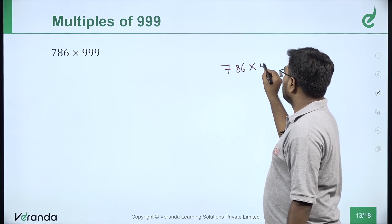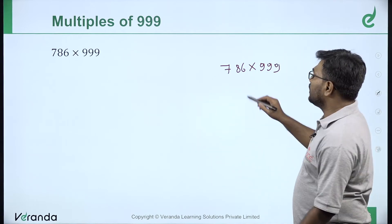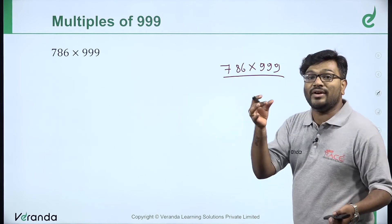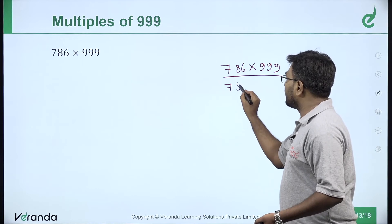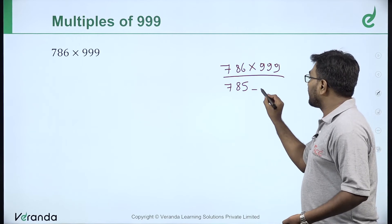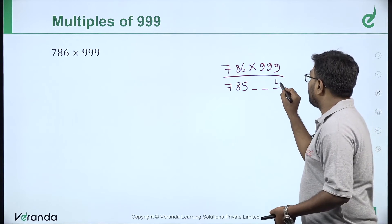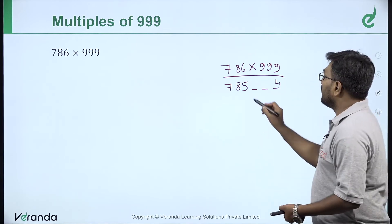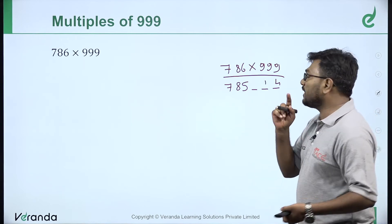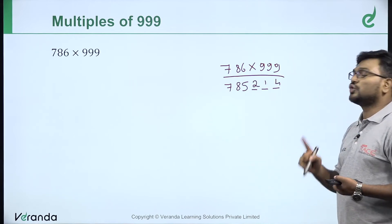Example: 786 into 9999. There are 3 digits and 4 nines. First step: 786 minus 1 = 785. Second step, complements: 5 gives 4, 8 gives 1, 7 gives 2. So the answer is 785214. Wait — that is 7852, then 14. Answer: 786 into 9999 is 7852214.